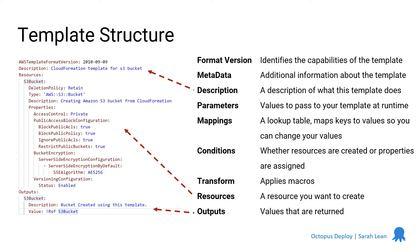We'll see later on where we actually output the IP address of a virtual machine that we create, so that I can go and check and do some smoke tests, or just click on that link and see what's happening inside of it. So the output section is quite useful for sanity checking, or for later on doing something more complex on your deployments.